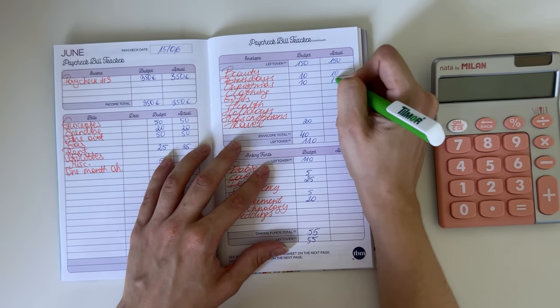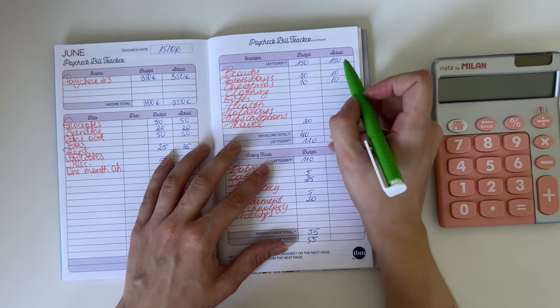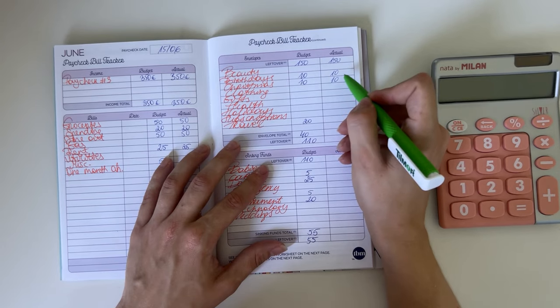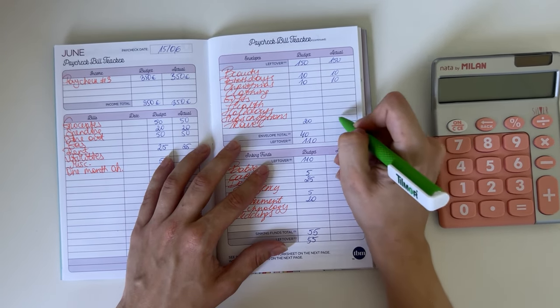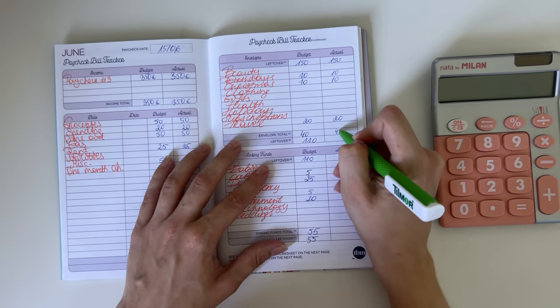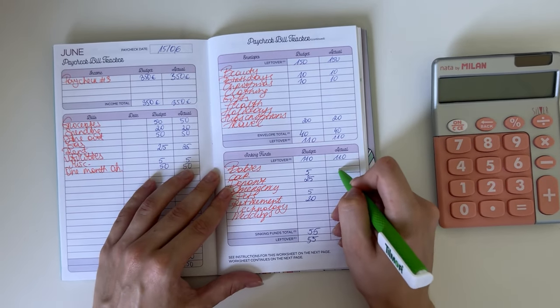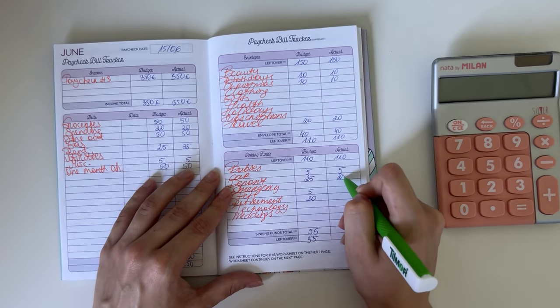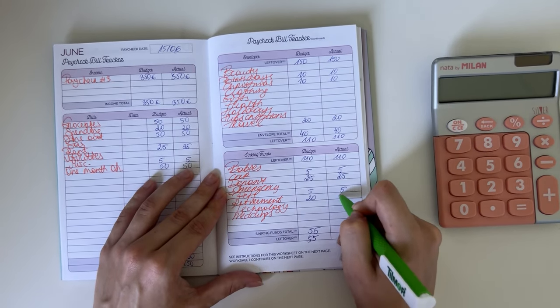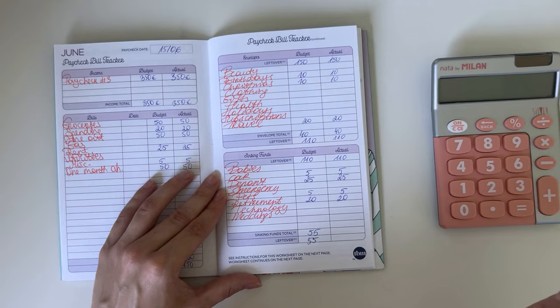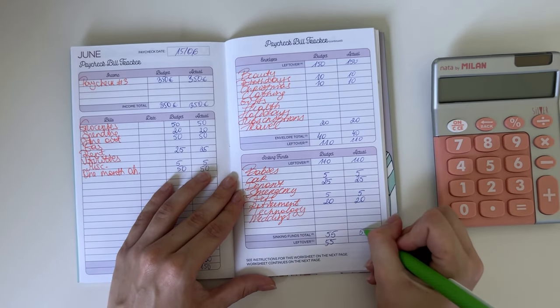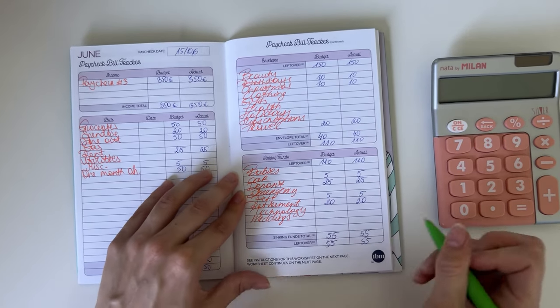Short-term sinking funds: 10 went into birthdays, 10 into Christmas, and 20 into travel, so that was 40. The remaining 110 is going down here to long-term sinking funds: 5 went into car, 25 in deposit, 5 into pets, and retirement got 20. That was 55, leaving us with 55.